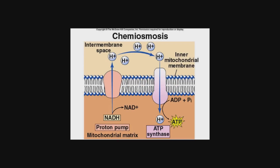So first of all, let's start off with the mitochondria. The energy from the electrons in the electron transport chain drive protons outside to the intermembrane space from the mitochondrial matrix. And this creates what's known as a proton gradient.